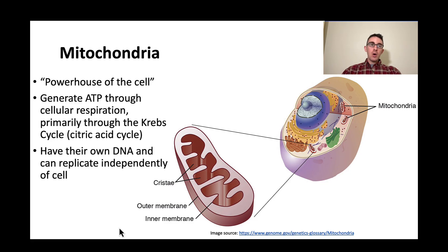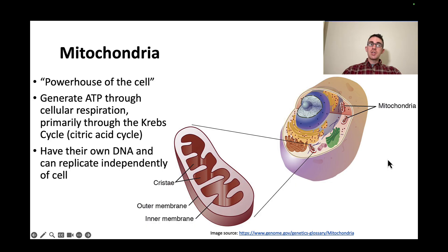Mitochondria are the powerhouse of the cell. They generate ATP through cellular respiration, primarily through the Krebs cycle, also called the citric acid cycle. So they're involved in cellular metabolism. One cool thing about them is they have their own DNA and can replicate independently of the cell.